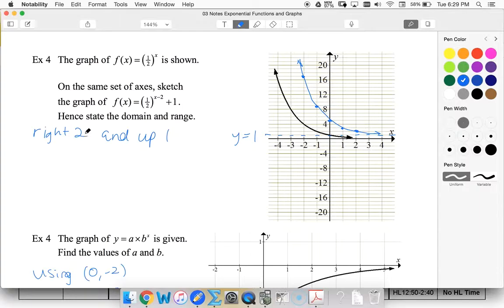If I want to test my y-intercept, of course I could say that f of 0 is going to be one-half to the negative 2 when I plug in 0, plus 1. A half to the negative 2, that's the same as 2 to the 2, plus 1, which is 5. So that concurs with what we found.